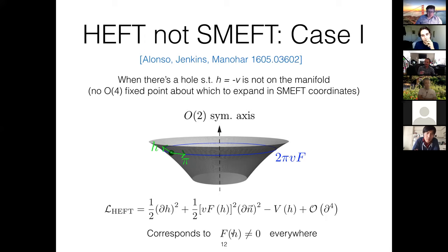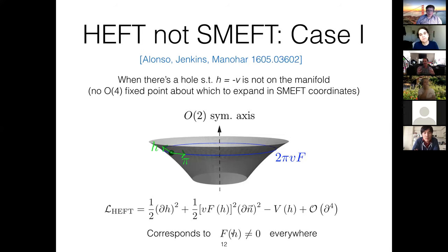My heuristic cartoon here is a sort of funnel where the nominal O(4) fixed point doesn't exist — corresponding to there never being a point where F vanishes. Such a theory simply doesn't have a well-defined expansion in terms of the linear coordinates of SMEFT. But there are things that should bother you about that. One of them is: if you took a SMEFT theory and wrote it as a HEFT theory, the functions K and F are not arbitrary functions in H — they have an infinite number of conditions on the different powers of v and H telling you that v and H are correlated. The existence of that infinite number of conditions is not captured by whether or not F vanishes somewhere.